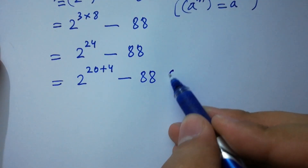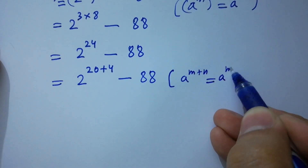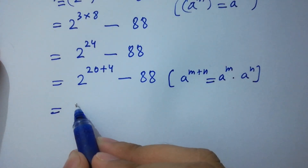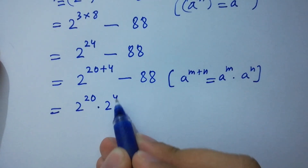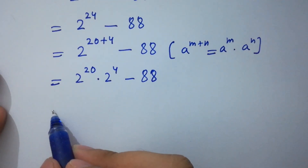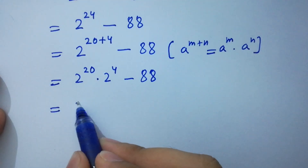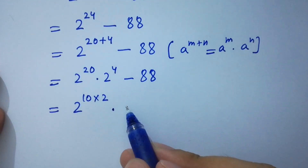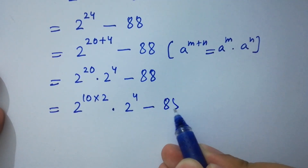2 to the power 24 is the same as 2 to the power 20 plus 4, minus 88. Using the rule a to the power m plus n equals a to the power m times a to the power n, it becomes 2 to the power 20 times 2 to the power 4, minus 88. And 2 to the power 20 is the same as (2 to the power 10) squared times 2 to the power 4, minus 88.